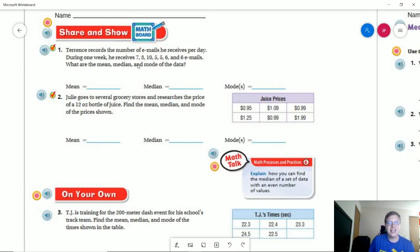So let's go ahead and take a look at number one for share and show. If I go ahead and take a look at my modes, actually, the first thing I'm going to recommend is go ahead and write things out in order so that we can figure out the median. So we're going to have 3, 5, 5, 6, 6, 7, 10.